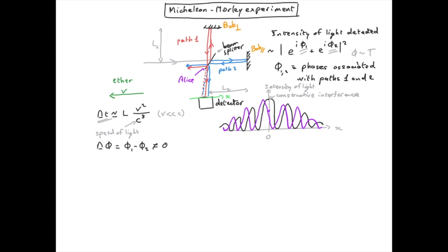Of course they had no idea what would be the direction of the velocity of the ether. So what they did was to repeat the measurement for different orientations of their interferometer. And what they found is that the interference pattern they measured was independent of the orientation of the interferometer.